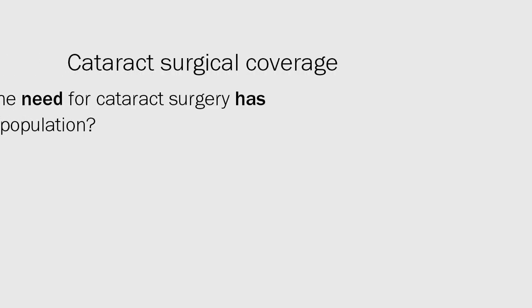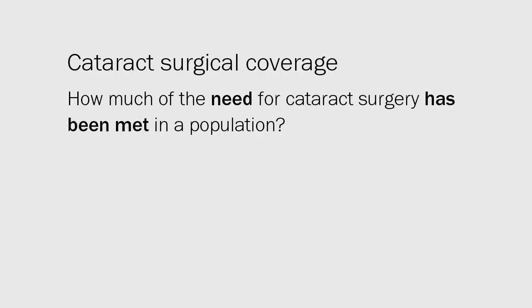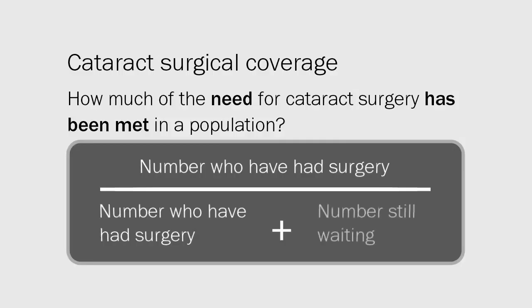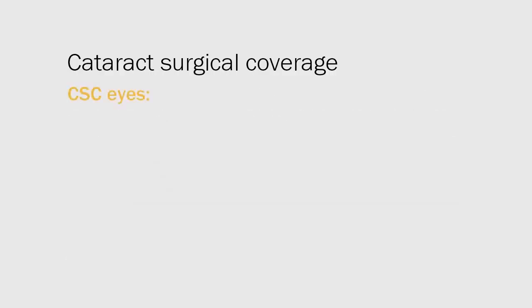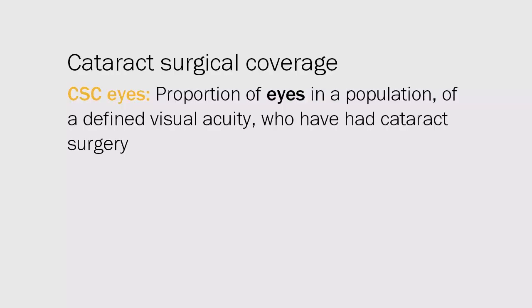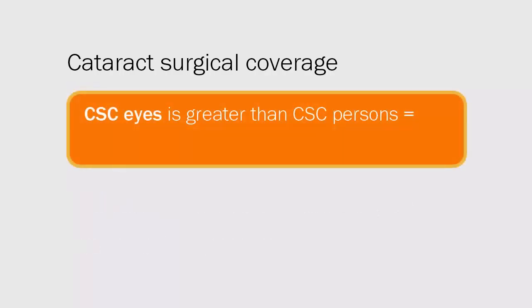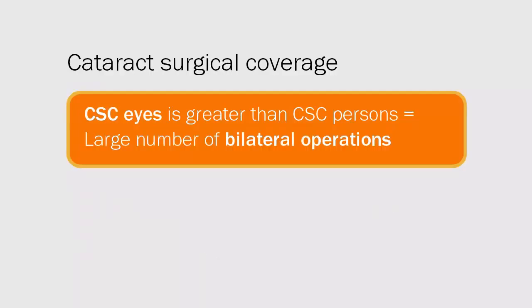Cataract surgical coverage helps to answer the question of how much of the need for cataract surgery has been met in a population. It can be calculated by dividing the number of people of a defined visual acuity who have had cataract surgery by the number of people who have had surgery plus those still waiting for surgery. To obtain this information, a Rapid Assessment of Avoidable Blindness, or RAAB survey, can be carried out. CSC eyes is the proportion of eyes in a population who have had cataract surgery, and CSC persons is the proportion of people in the population who have had cataract surgery. These figures can also be divided by gender to assess the proportion of women treated.